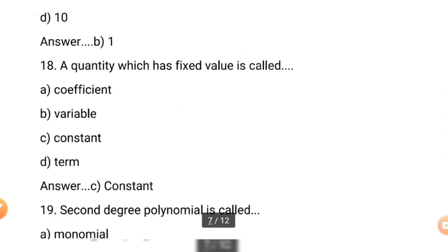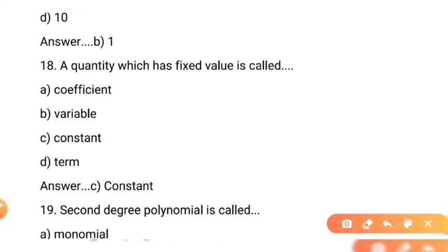Question number 18: a quantity which has fixed value is called? Yaani ek aisi quantity jis ki value hamesha fix ho, kabhi bhi change na ho, usko hum kya kahein ge? Usko kahein ge constant. Correct option C — constant. Agar kisi quantity ki value change ho to usko hum variable kehte hain. Yahan par aisi value jis ki value fix ho, use constant kahein ge.